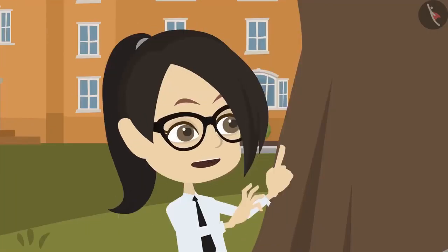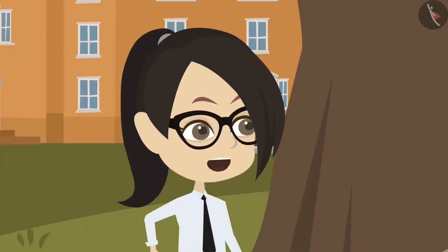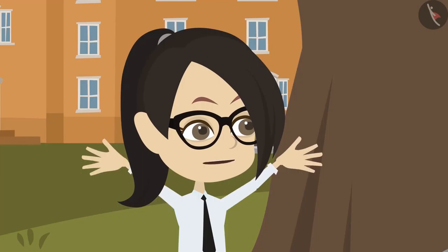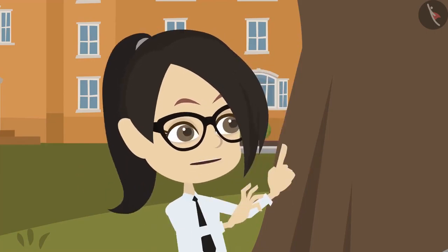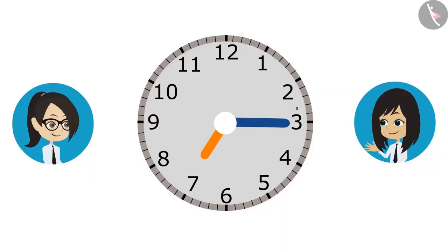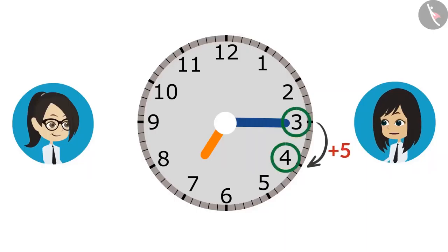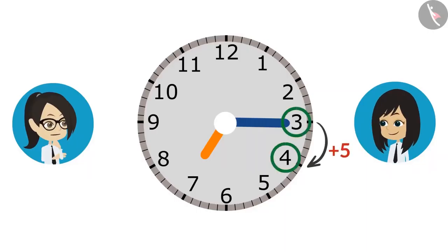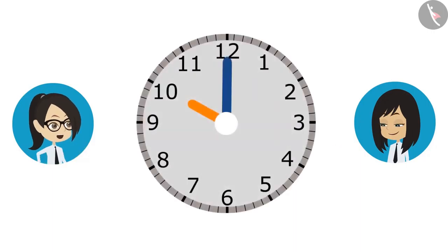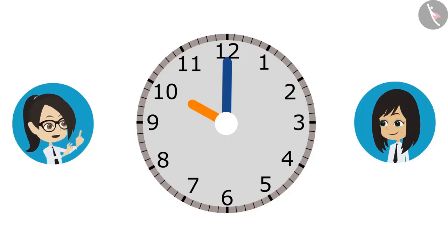Then let's do one thing — let's draw 10 on the clock and then rewind the minute hand 55 minutes behind. Remember, the difference from one number to another number is 5. Now look carefully — I've drawn 10 on the clock. Let's rewind the minute hand until it reaches 55.